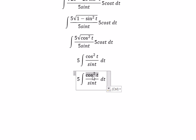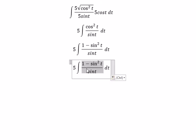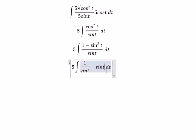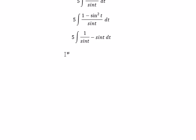We can rewrite cos squared t as 1 minus sin squared t. So we get 5 times the integral of (1 over sin t minus sin t) dt. The square root simplifies, and we can split this integral.